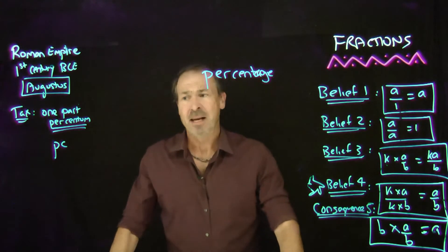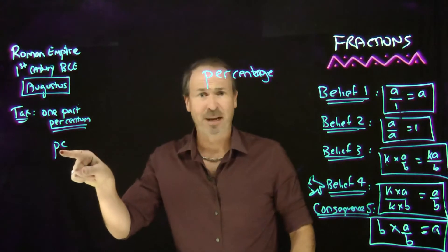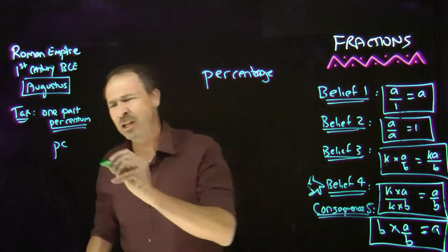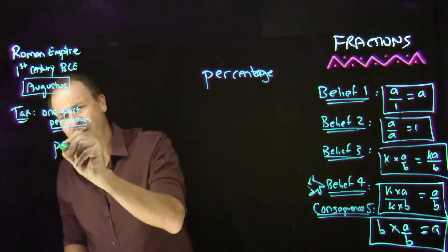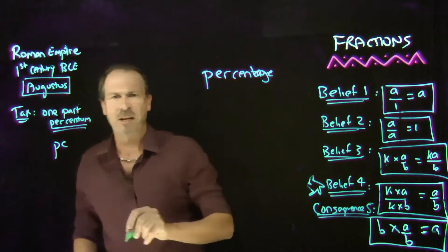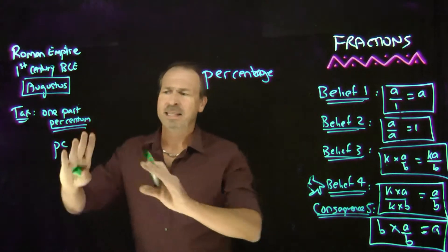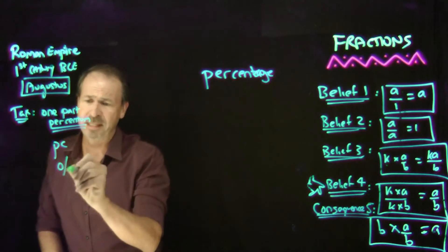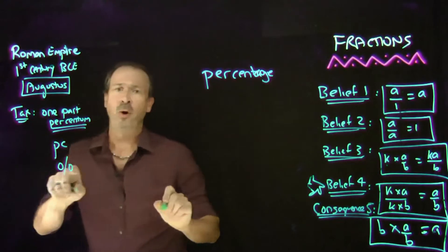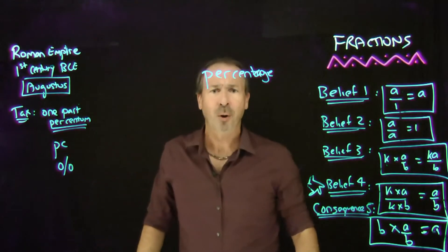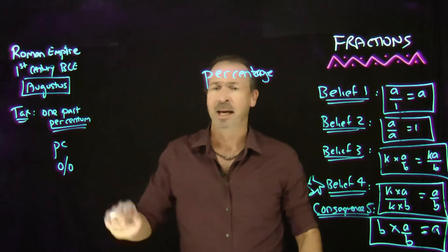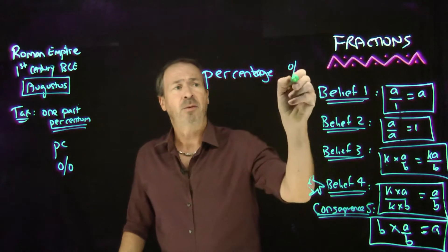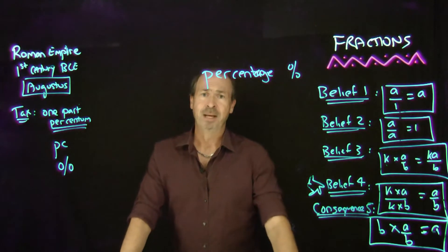But even then that became a little bit cumbersome, and people started doing even shorthand for that. Basically, you've got like a couple of curved symbols and a straight line. Somehow it evolved over the centuries to become this symbol for per centum — and that's what we associate with the symbol for percentage to this day.